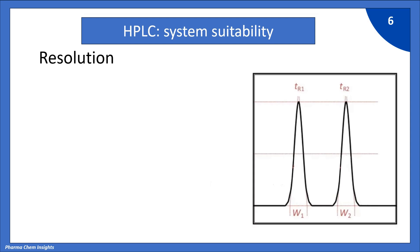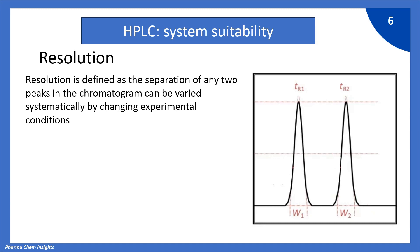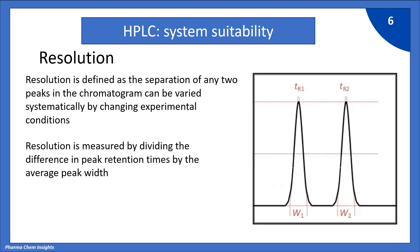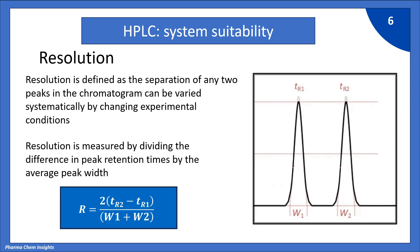Next parameter: resolution. Resolution is defined as the separation of any two peaks in the chromatogram, which can be varied systematically by changing experimental conditions. Resolution is measured by dividing the difference in peak retention times by the average peak width. The formula is: R = 2 × (TR2 − TR1) / (W1 + W2), where TR1 and TR2 represent peak retention times and W1 and W2 represent peak widths from the base.